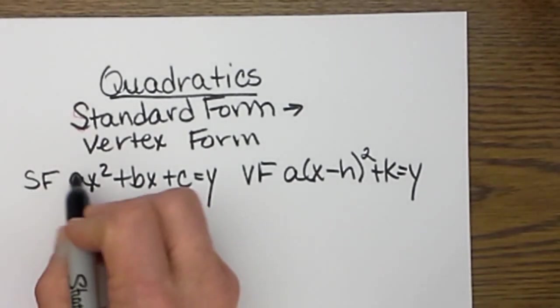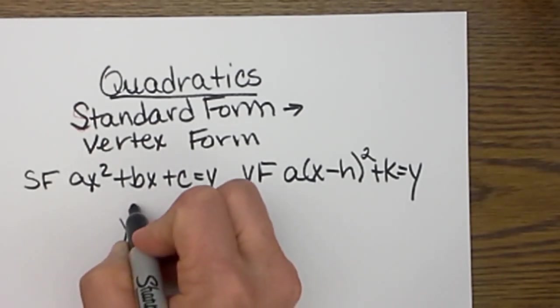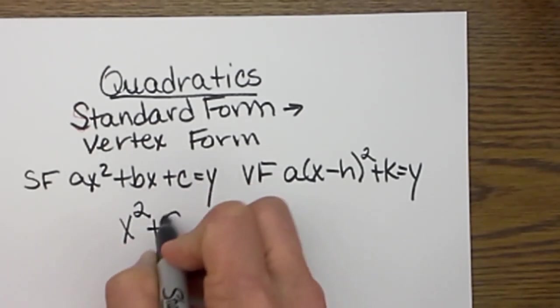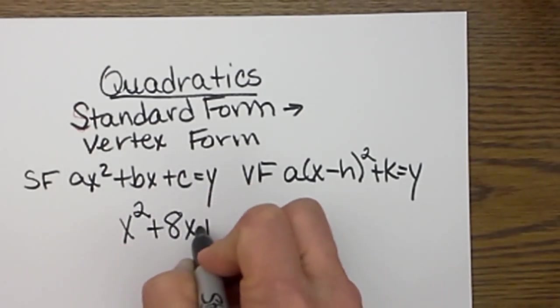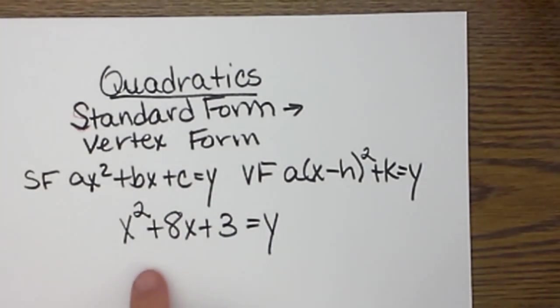We are going to start with a lead coefficient of 1, which is the easier kind. Let's say we have x² + 8x + 3 = y. We want to change this to the vertex form.